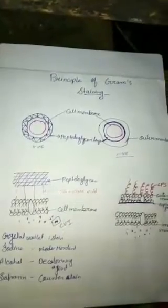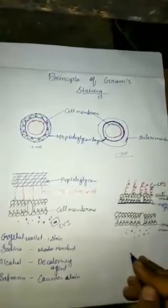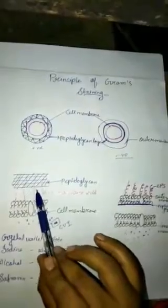Alcohol is used for decoloring of this staining. When we use the alcohol, it washes all the outer membrane and lipopolysaccharides in Gram negative. But this alcohol cannot wash the peptidoglycan layer of both cells, Gram positive and Gram negative.